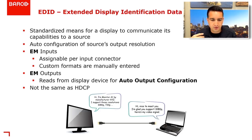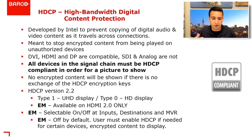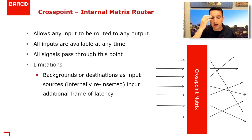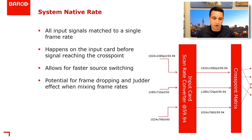Let's talk about some terminology for Event Master. We do EDID on the inputs, custom format outputs, and we can read EDIDs on outputs and conform to them. We fully support HDCP — we don't strip or bypass anything; all devices in the signal chain must be compliant. Internally we utilize a crosspoint matrix, which is an internal matrix router — it allows any input to be routed to any output. All signals pass through the crosspoint matrix. Before hitting the crosspoint, every input gets converted to a system-native rate via a scan rate converter — by default set to 59.94.